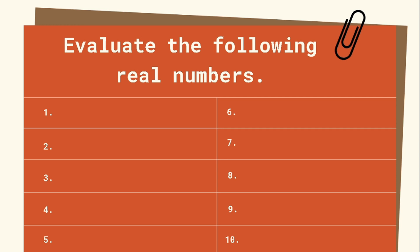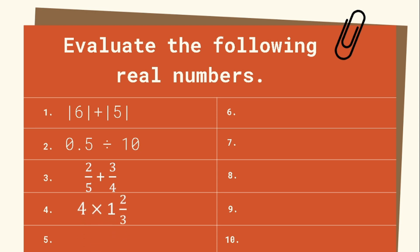But before we proceed, let's have some review of our previous discussions by evaluating the following real numbers. Number 1: absolute value of 6 plus the absolute value of 5. Number 2: 0.5 divided by 10. Number 3: 2 over 5 plus 3 over 4. Number 4: 4 times 1 and 2 thirds. Number 5: 1 half minus 1 third. Number 6: 4 over 9 times 9 over 2. Number 7: 3 over 7 plus 5 over 7.